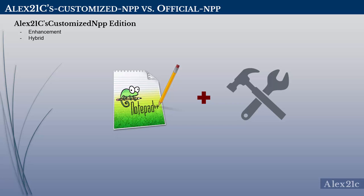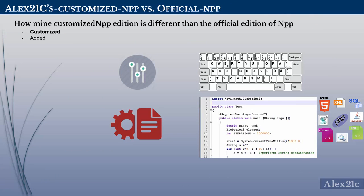My customized edition is nothing but a simple enhancement over the standard Notepad++ edition. It's a hybrid of my custom-made settings and extra added features over the standard Notepad++. The things I have customized and added in this edition include preference settings, keyword shortcuts, and code highlighting schema for various programming languages.